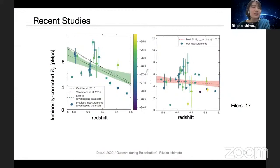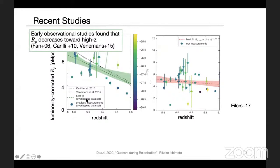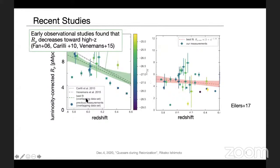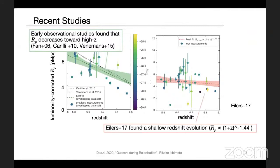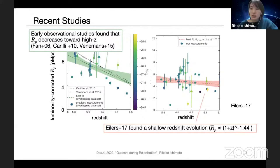I think you have already listened about the importance of proximity zone in the talks so far, but let me briefly introduce the observational studies of proximity zone. In earlier studies, it is said that proximity zone evolves with redshift z~6, like shown in the left figure. However, recently Eilers et al. measured the proximity zone sizes of 30 luminous quasars and found a shallow redshift evolution shown in the right figure. One of the reasons for this disagreement is that they are based only on luminous quasars. The proximity zone measurements of a wider luminosity range is needed to conclude the trend.